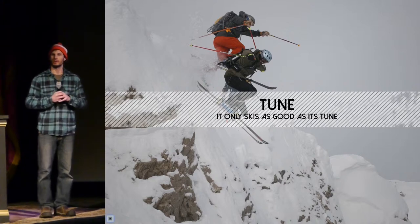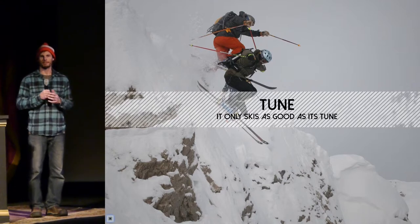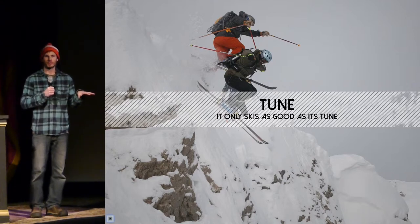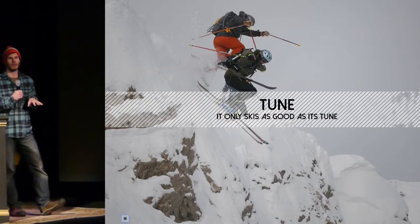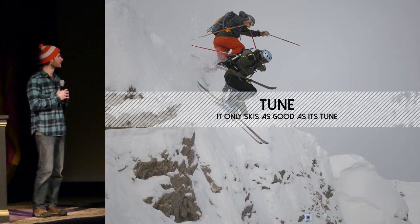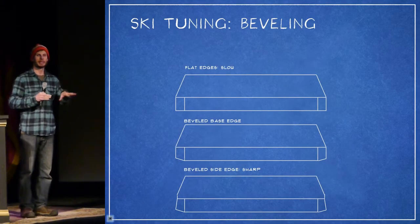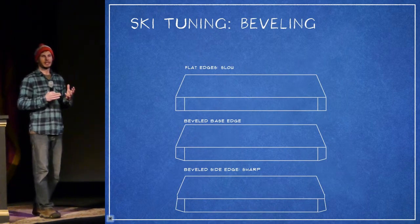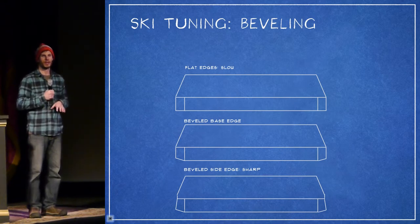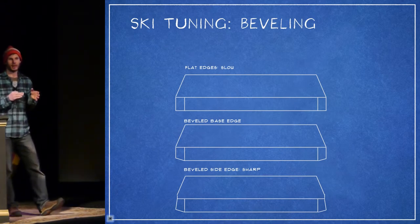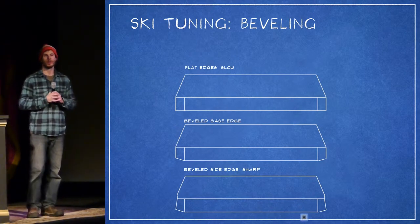The last thing that we do when we make skis is tune them. The first part of that is running the ski through what's called a stone grind. This flattens the base of the ski, and it also engraves a pattern in it that allows the ski to remove water from the base, similar to the way tread on a tire works. Next, we bevel the base edge at an exact degree so that the skis can slide side to side without feeling grabby. After that, we bevel the side of the edge to bring it back to a 90-degree angle or more so that it will feel sharp.